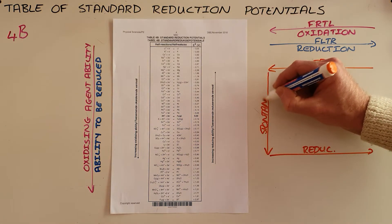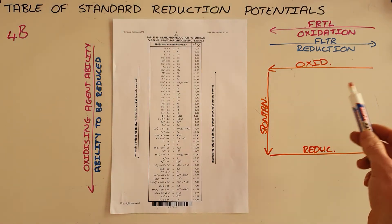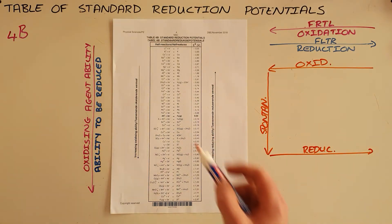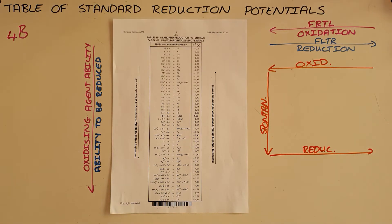Very simply put, when oxidation occurs above reduction on table 4B, this reaction will always be spontaneous and therefore be able to yield a galvanic or voltaic cell, because those are defined by spontaneous reactions that produce an electrical current.